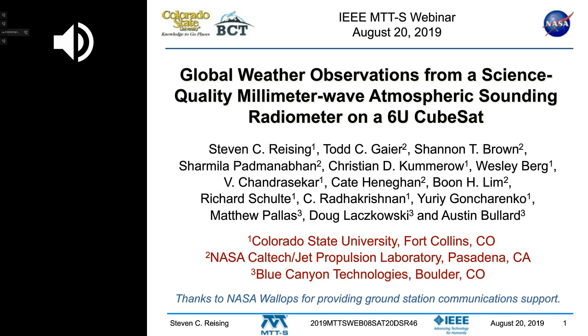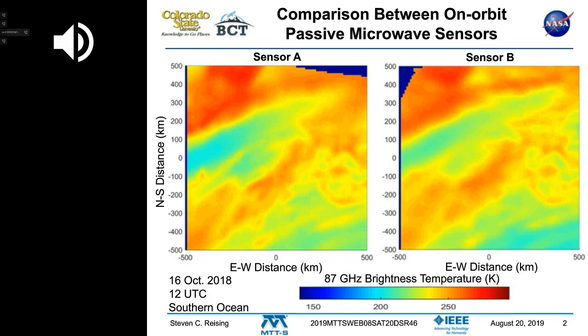If you look at this slide — like a game show with door number one, door number two, and door number three — we're looking at two different sensors. One is on a CubeSat and the other is from a NOAA operational satellite that has been one of the standards in the field. The question is: can you tell which one is which?